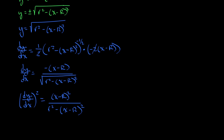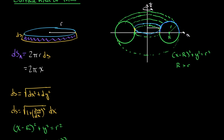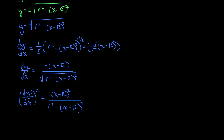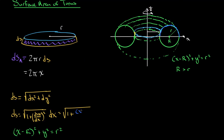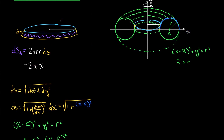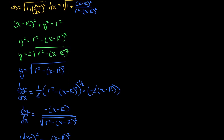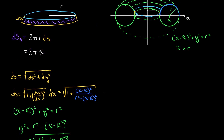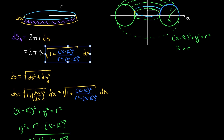Now we can throw this back into what we were talking about for a little piece of arc length. We found that 1 plus (dy/dx)² equals 1 plus (x minus R)² over (lowercase r² minus (x minus R)²). And we can't forget our dx out there. So we have our little piece of arc length now. This entire thing — 2πx times the square root of that expression, times dx — is our little piece of surface area.